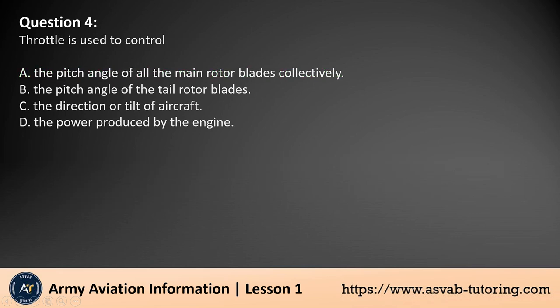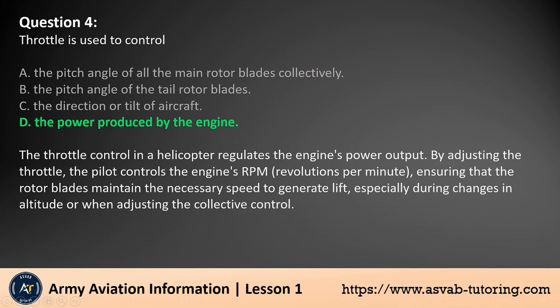Question 4. Throttle is used to control. A. The pitch angle of all the main rotor blades collectively. B. The pitch angle of the tail rotor blades. C. The direction or tilt of aircraft. D. The power produced by the engine. The answer is D.